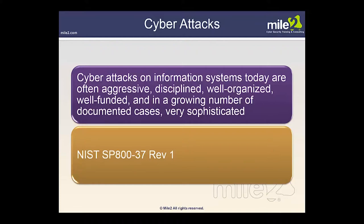There is NIST Special Publication 800-37 Revision 1. The idea behind this is to transform the traditional certification and accreditation process into a six-step Risk Management Framework. The second step of the RMF is to select the appropriate subset of security controls from your control catalog found in NIST Special Publication 800-53. As we proceed through this material, you will see these six steps in great detail.